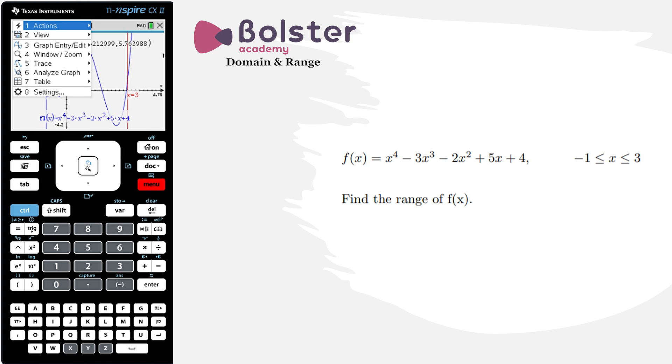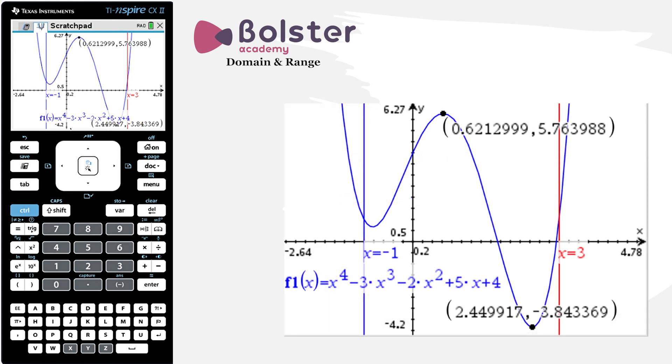Let's get the minimum value. Analyze graph, minimum, again choose the correct graph and choose my lower and upper bounds appropriately. The range that this graph takes on between minus one and three goes all the way from minus 3.84 to three significant figures, up to 5.76 to three significant figures. These are all of the y values that the function takes on between these two x points.